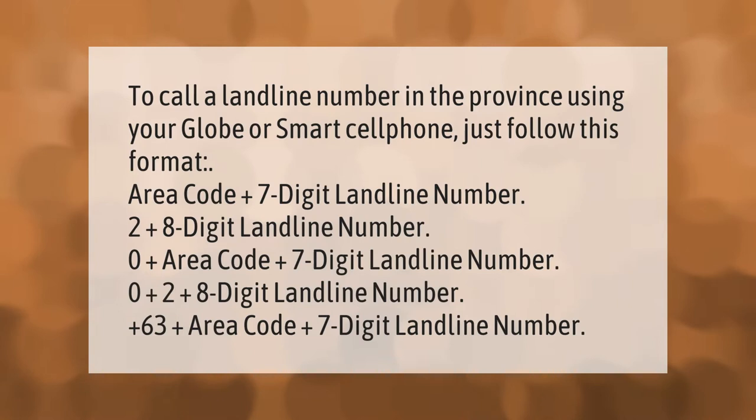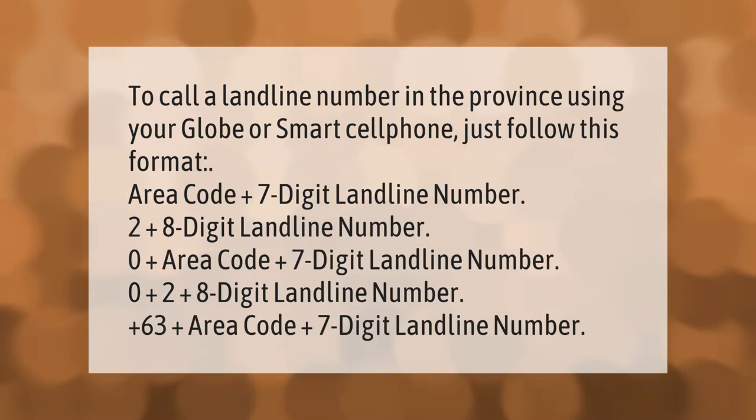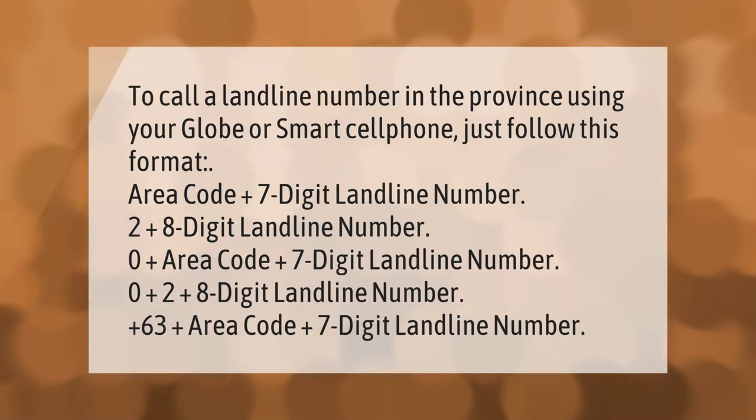To call a landline number in the province using your Globe or Smart cell phone, just follow this format: area code plus seven-digit landline number; two plus eight-digit landline number; zero plus area code plus seven-digit landline number; zero plus two plus eight-digit landline number; plus sixty-three plus area code plus seven-digit landline number.